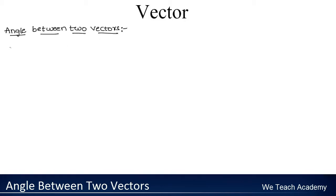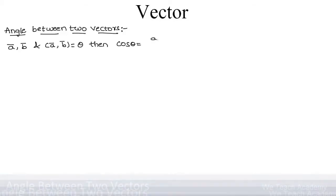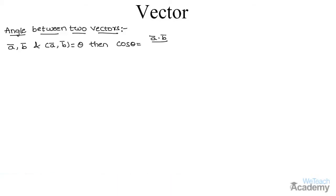We have a theorem: if a bar and b bar are two vectors and the angle made between them is theta, then cos theta is given by a bar dot b bar divided by mod a bar into mod b bar.